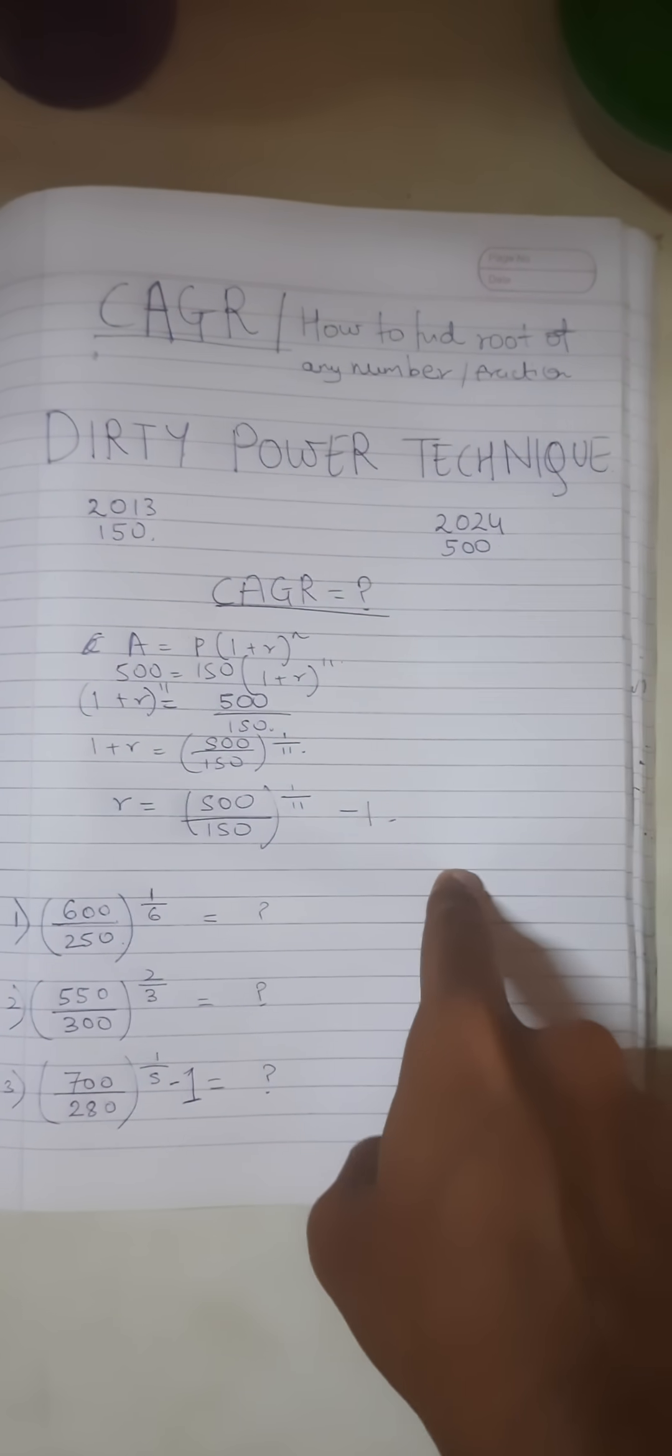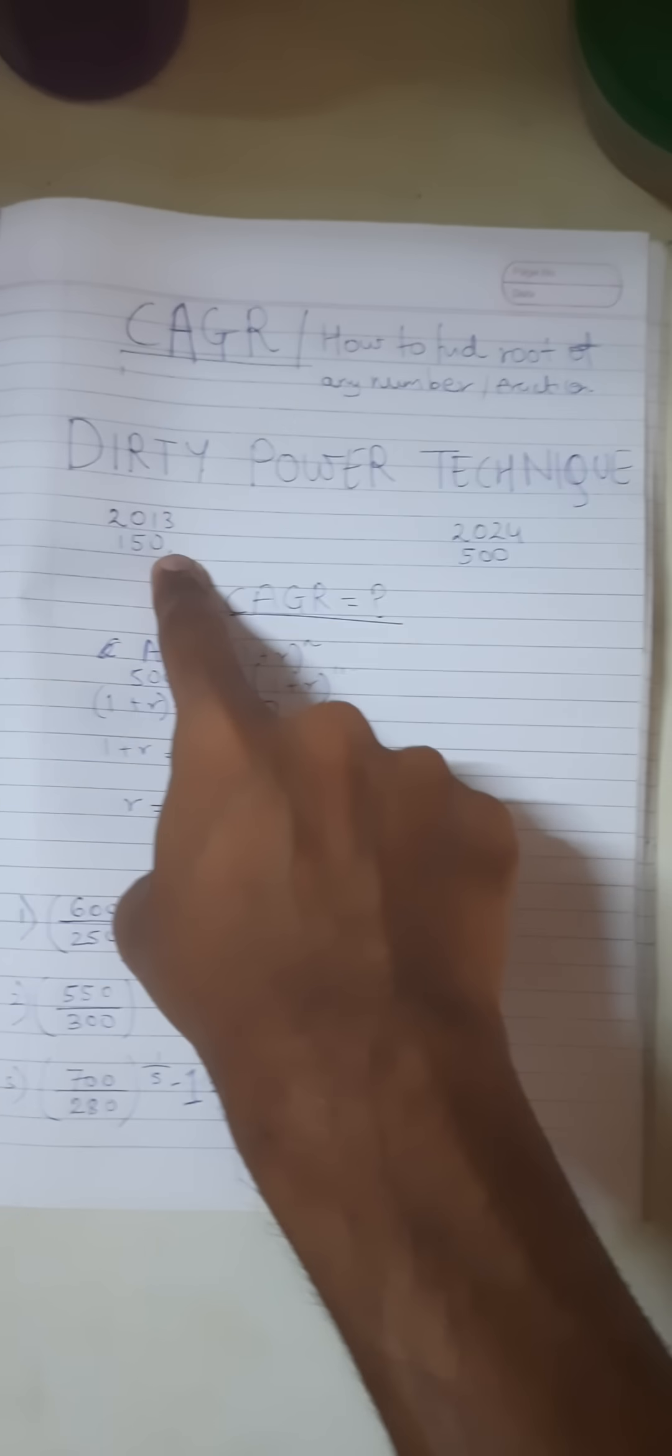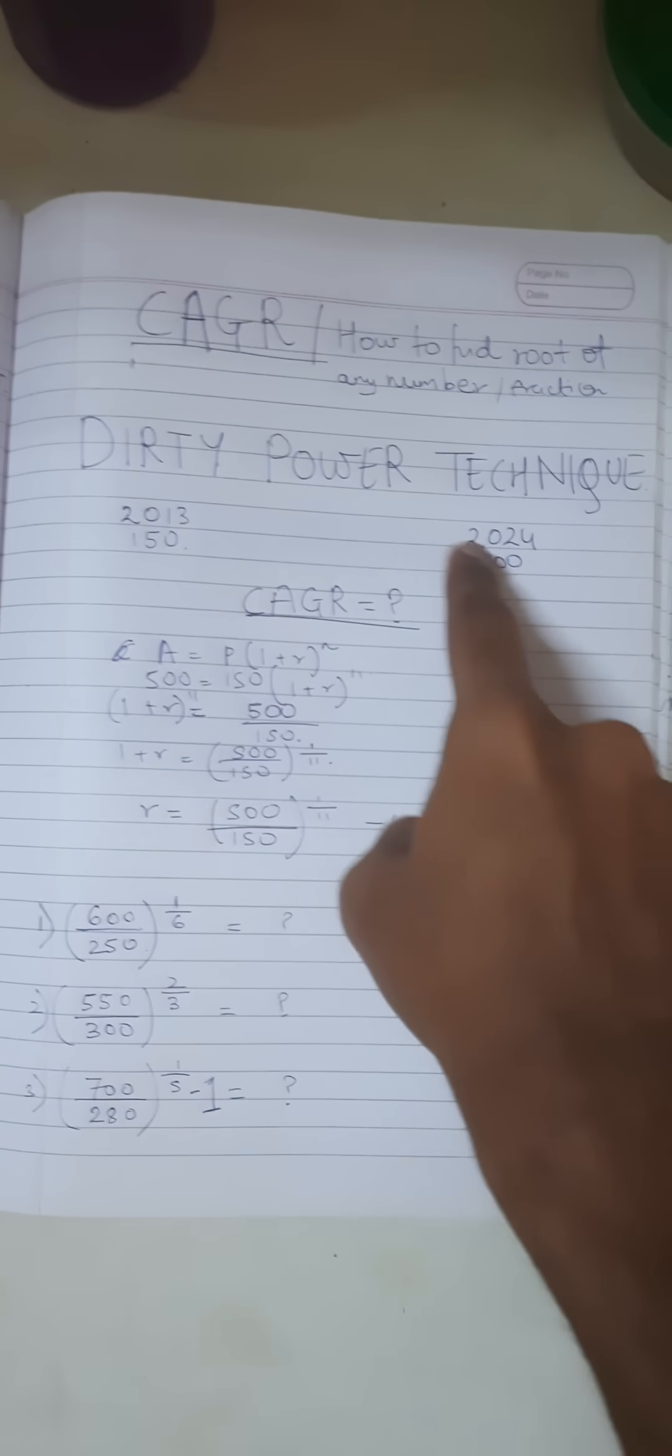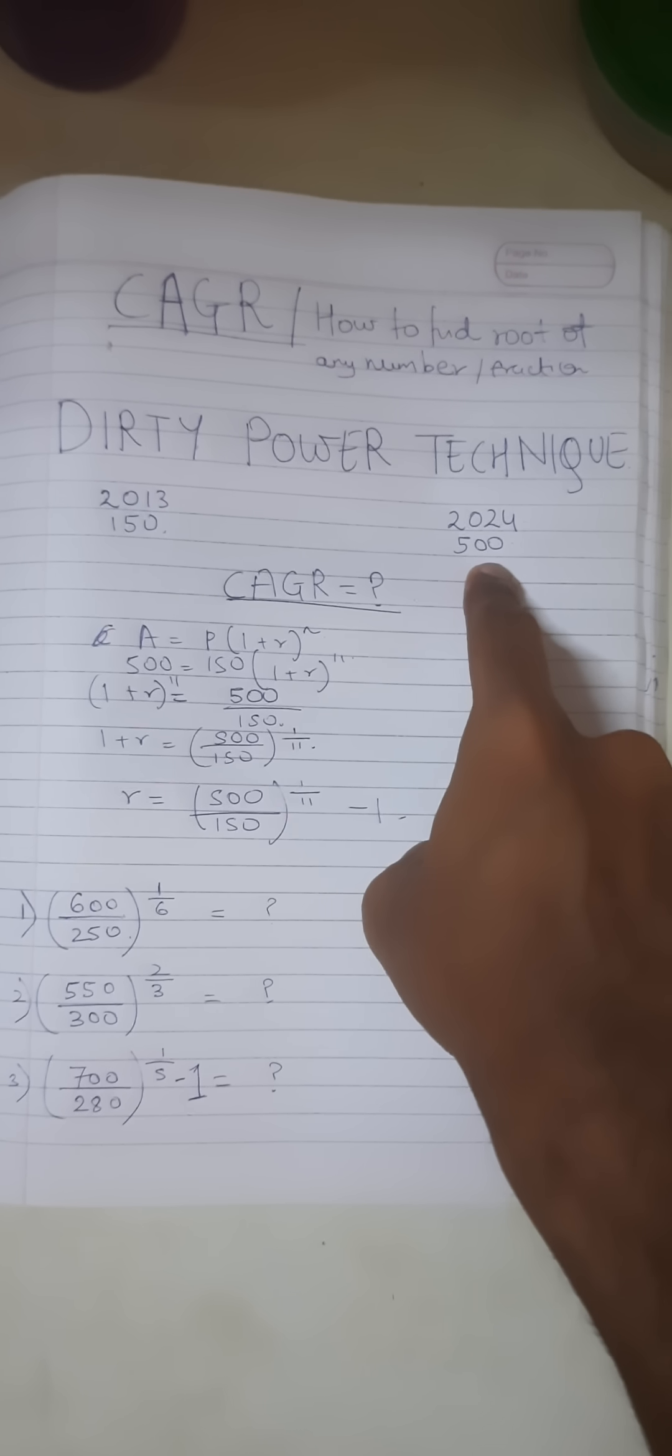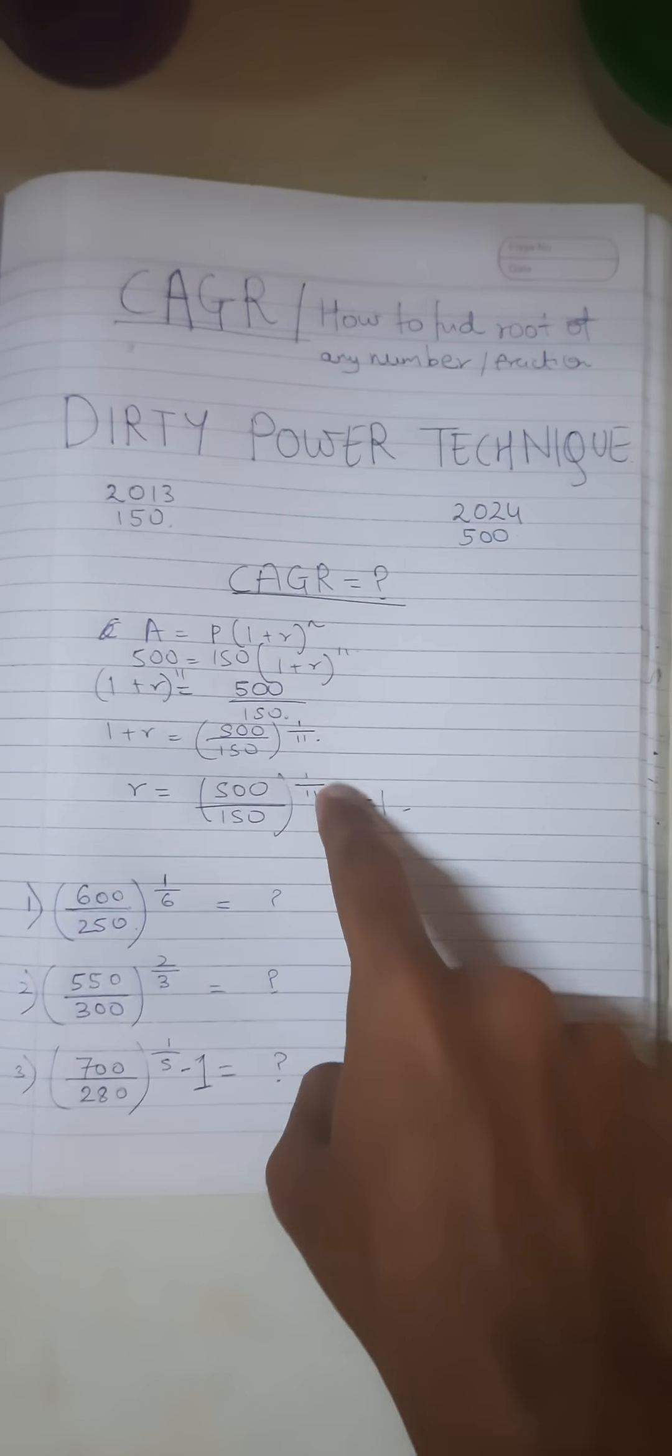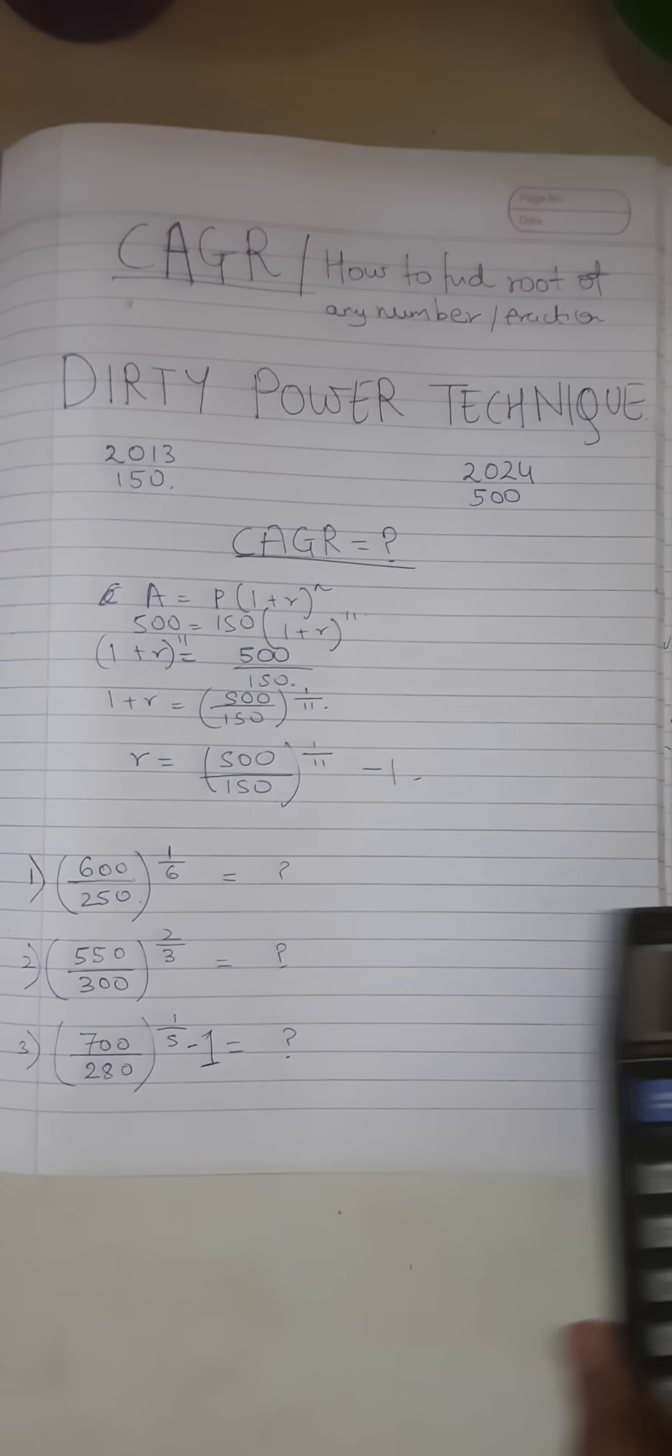In this example, suppose you had invested 150 rupees in 2013 which has grown to rupees 524. What is the CAGR? So as you can see, this is the derivation for it and we have to solve this in order to find r.